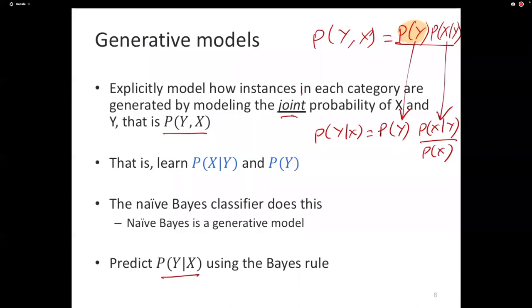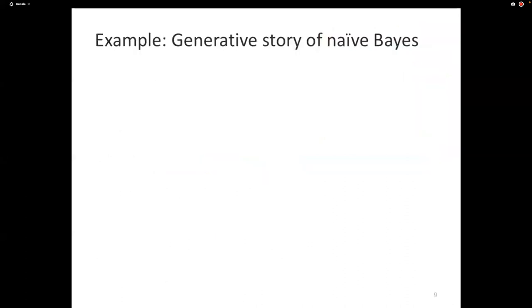So naive Bayes, as I said, is an example of a generative model. Typically, generative models come with something called a generative story. This is the story of how each example is generated. I'll walk you through the generative story of the naive Bayes classifier. It's simple enough that hopefully it makes sense. First, we pick a label. You decide which section of the newspaper this article should go into. We don't have an article yet, we are generating the article. So you first decide the label, let's say the label is entertainment.